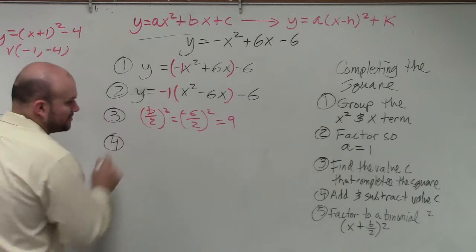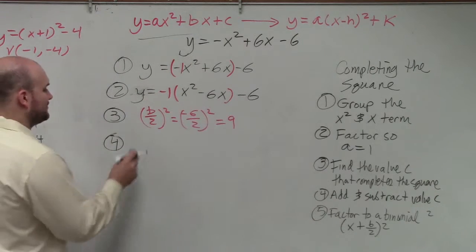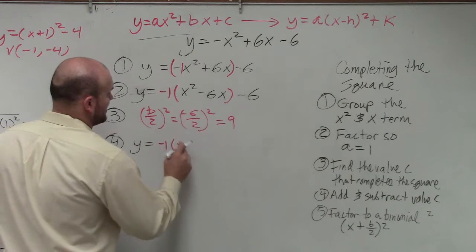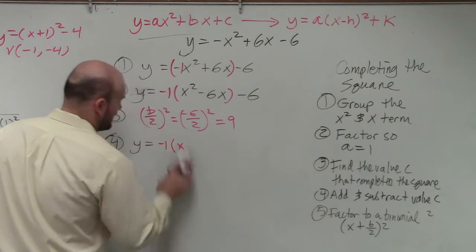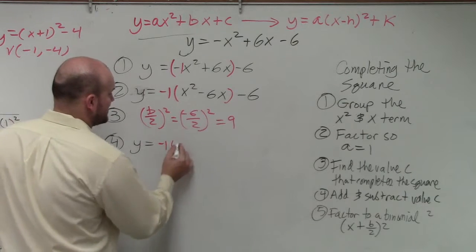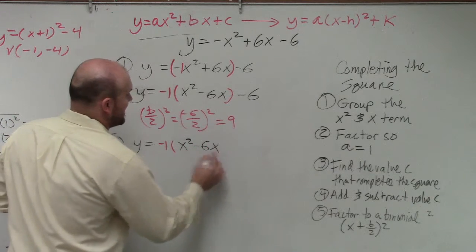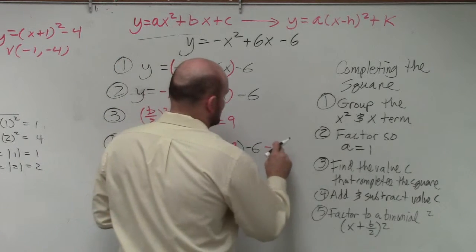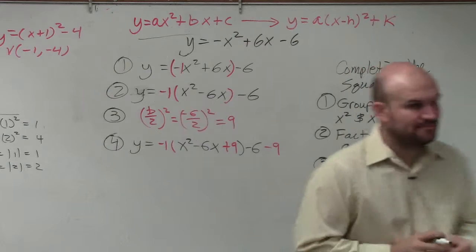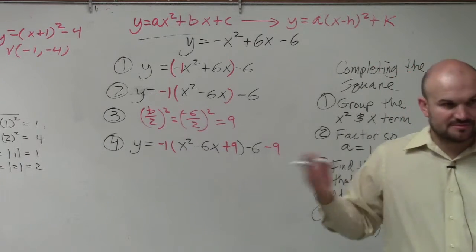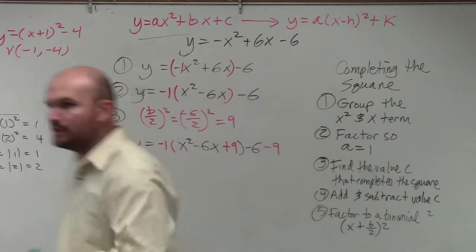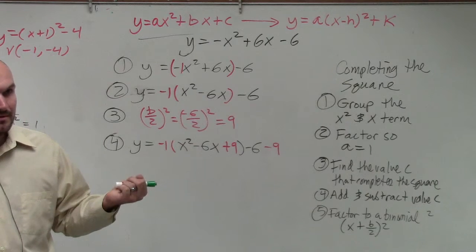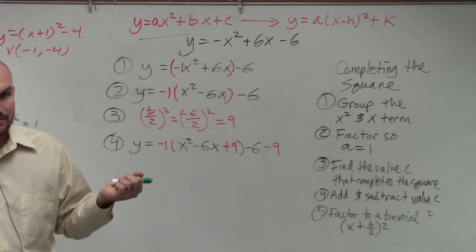And here's step four, the hardest one. Add and subtract the value. So we have y equals negative 1 times x squared minus 6x plus 9 minus 6 minus 9. Does everybody see what I did? Add and subtract it, just like the other one. Does anybody have any questions up to here? Because I've got to add one more step to this.